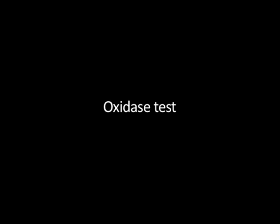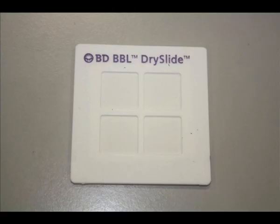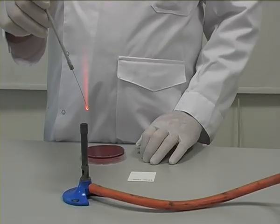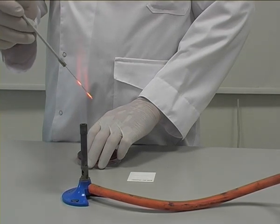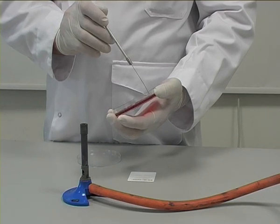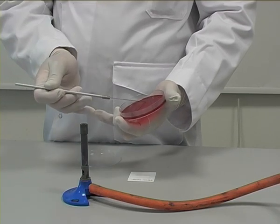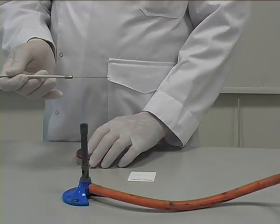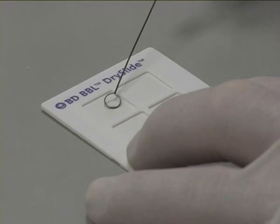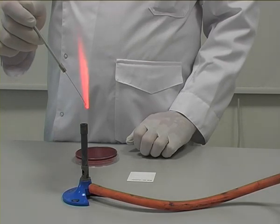Oxidase test. Commercially available oxidase paper is impregnated with the oxidase reagent. Step 1: Streaking a bacterial colony onto oxidase paper. Using a sterile inoculating loop, an isolated bacterial colony is removed from an agar plate. The colony is then streaked firmly across the surface of the oxidase paper, and the loop is sterilised again.